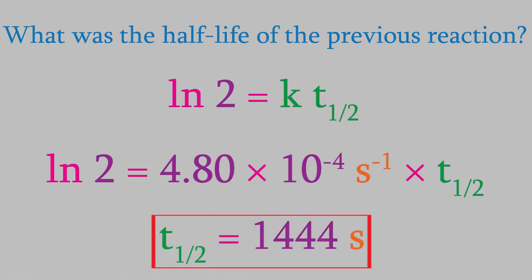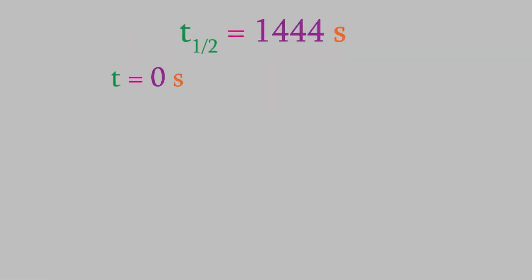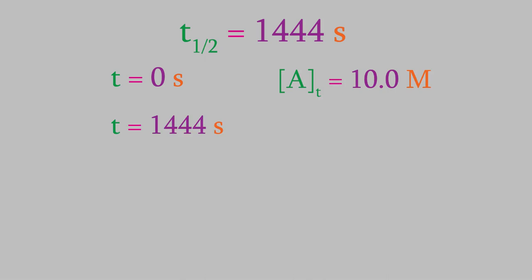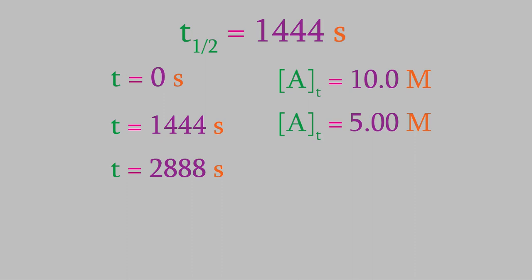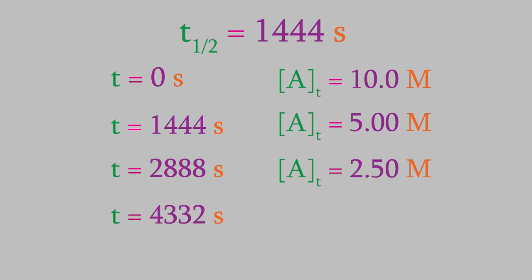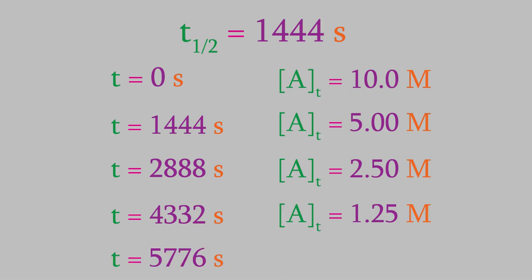So what does that tell us about the reaction? After 1,444 seconds, half of the reactants will be gone, and there's an interesting consequence of that. Suppose we started off with a 10 molar concentration. After 1,444 seconds, half of it would be gone, so we'd have a 5 molar concentration. But what about 1,444 seconds after that? The concentration wouldn't go all the way down to zero. Instead, it would be half of what was left, so we'd have 2.5 molars of reactant left. After another 1,444 seconds, we'd have 1.25 molars, and then 0.625 molar after that. Every time a half-life goes by, the concentration decreases by half.